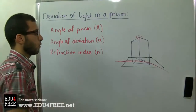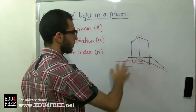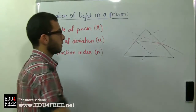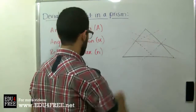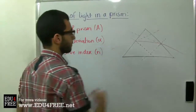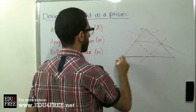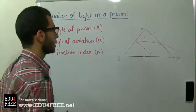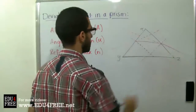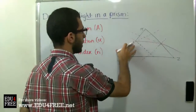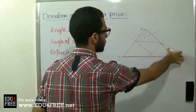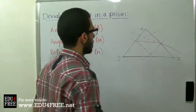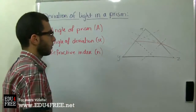We are going to draw the base of the prism with the light passing through it. The black triangle is the base of the prism — let's call it X, Y, Z. This is the incident ray, this is the emergent ray, and this is the light passing through the base of the prism.